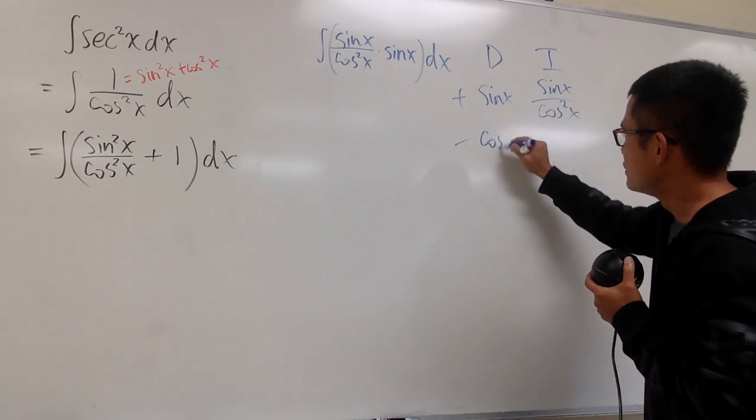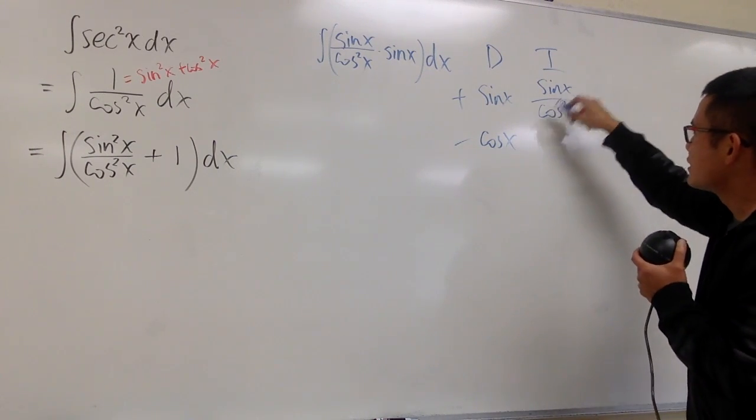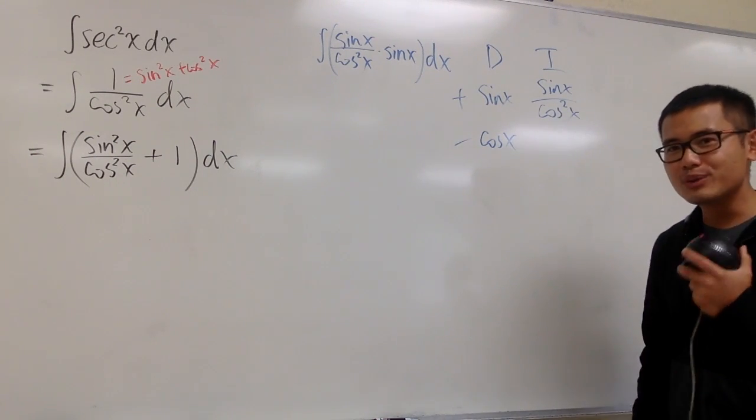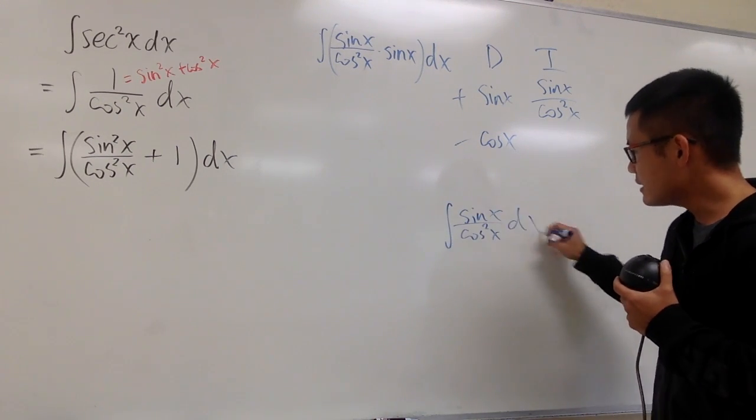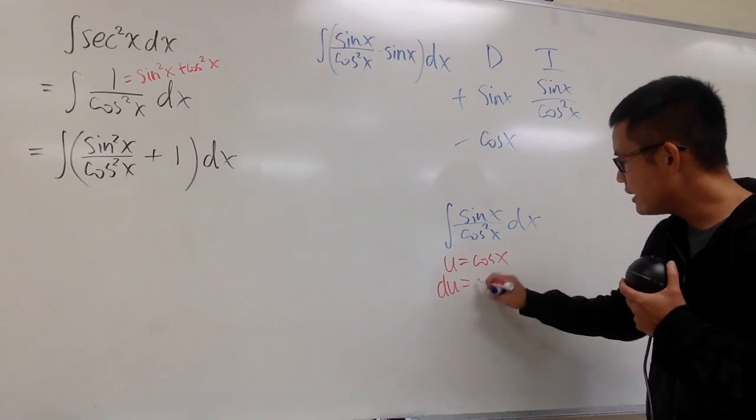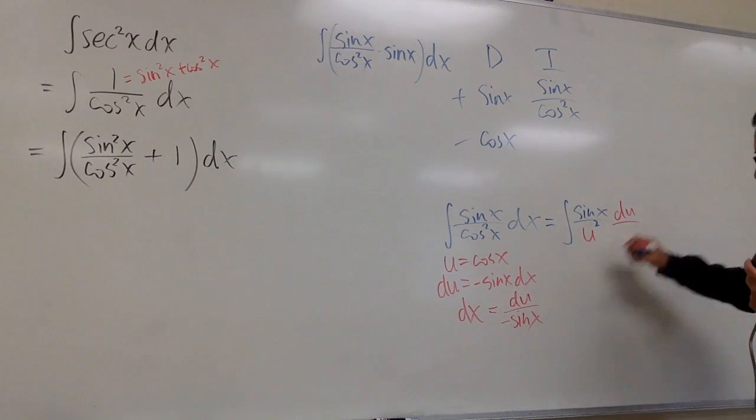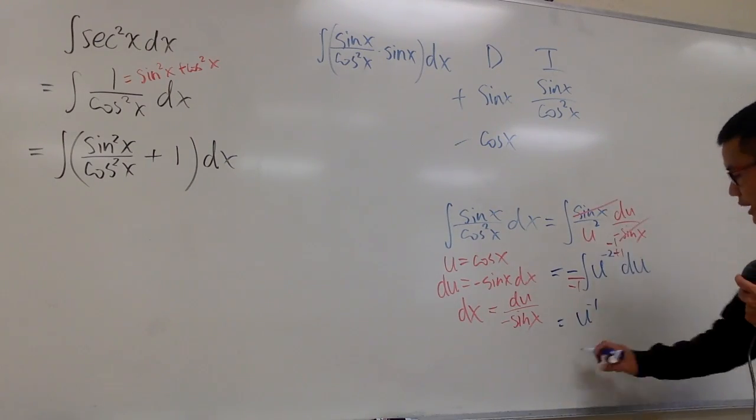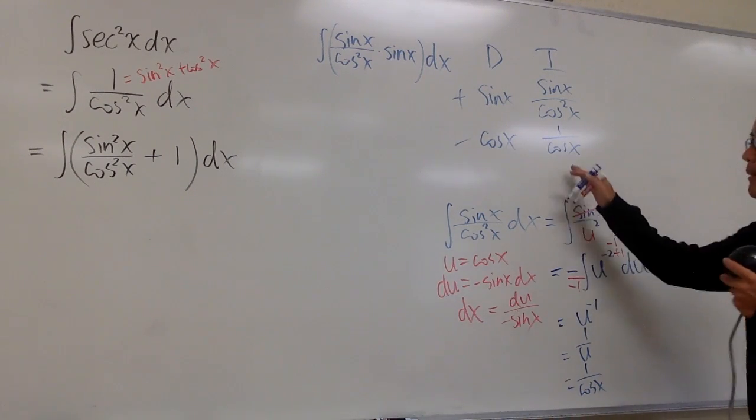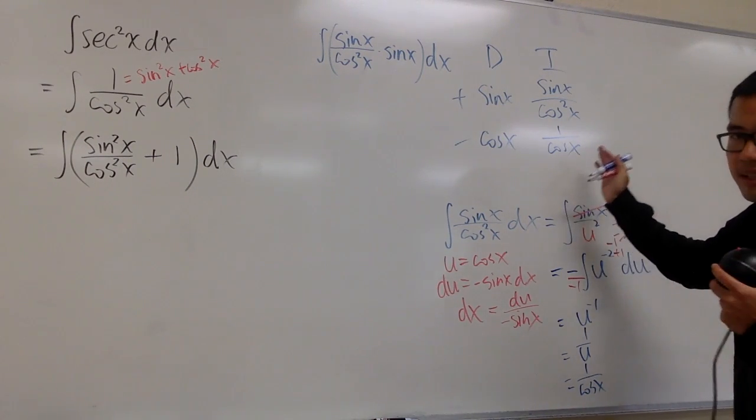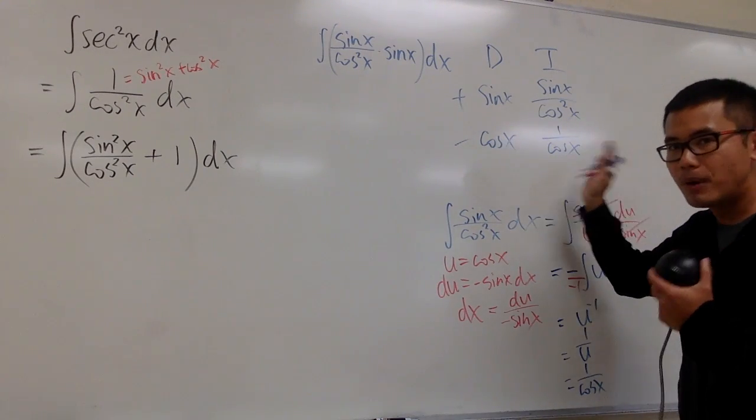I'm going to integrate sine x over cosine squared x, and I will differentiate sine x. Don't forget the signs on the side. Two rows is enough. Let's differentiate sine x first, which is going to give us cosine x. And now, let's integrate sine x over cosine squared x. Let me just do it real quick for you.